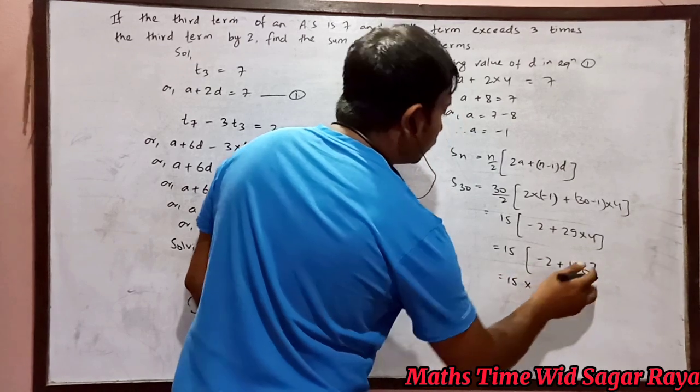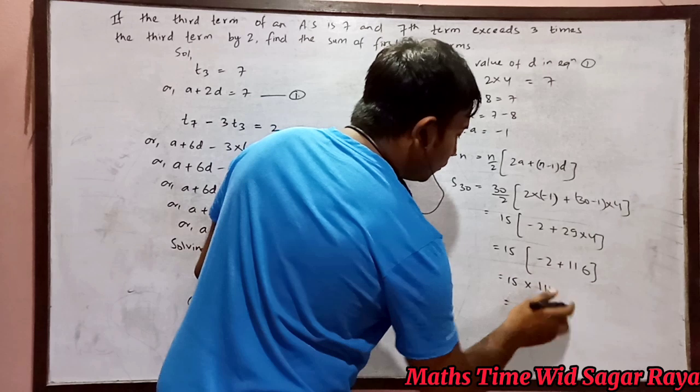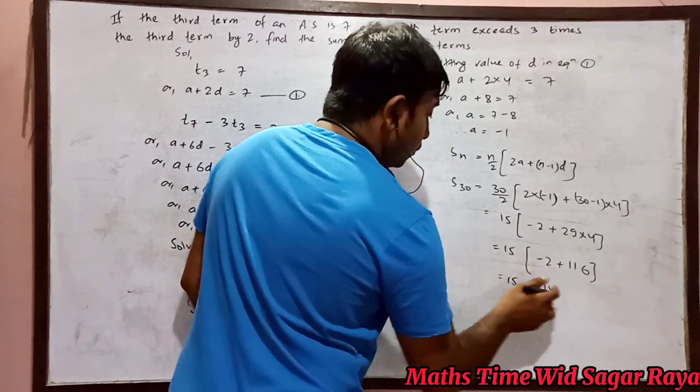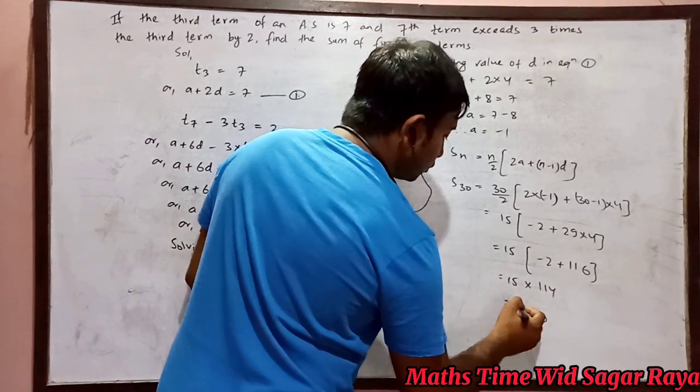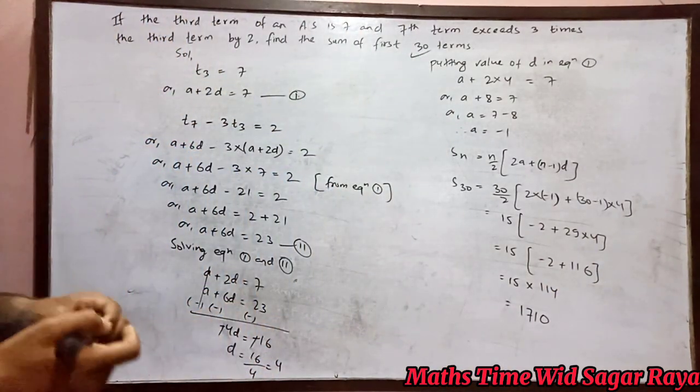So 15 times 114, which equals 1710. This is our required answer.